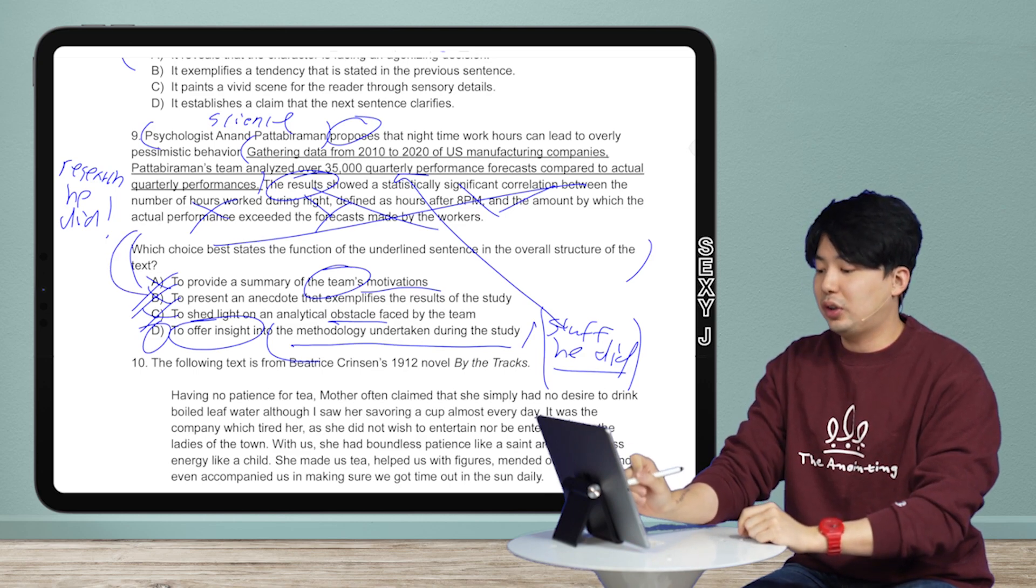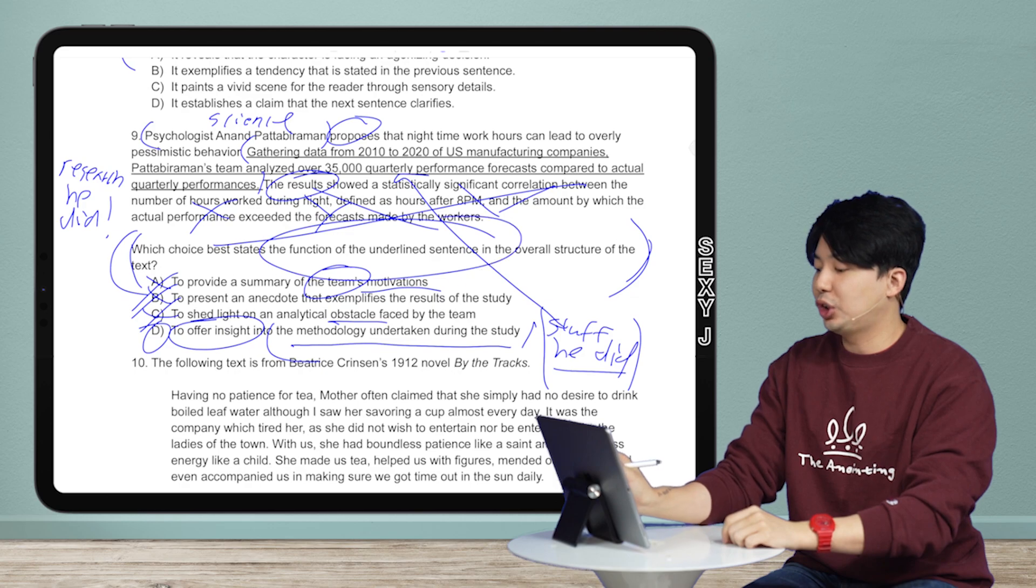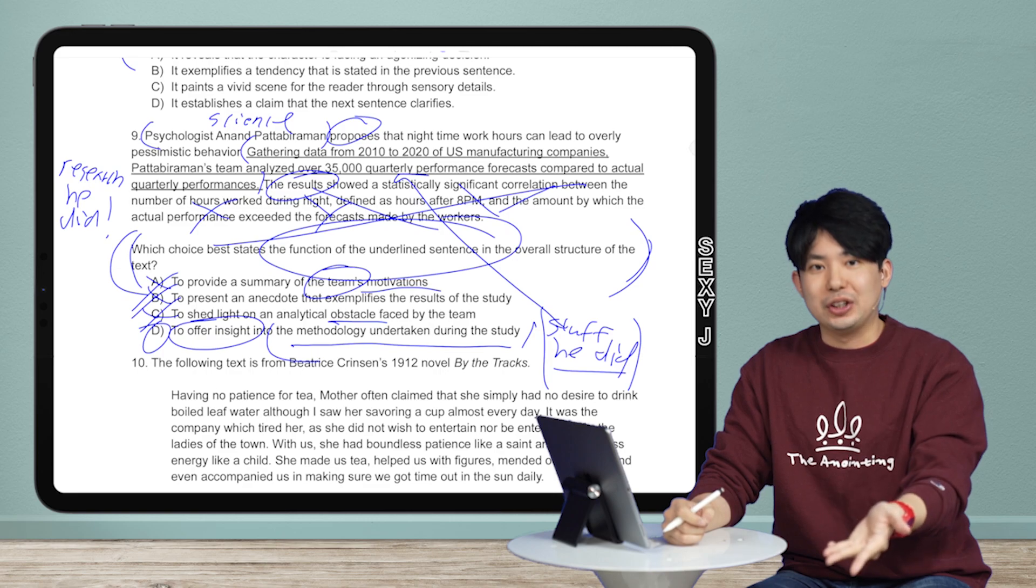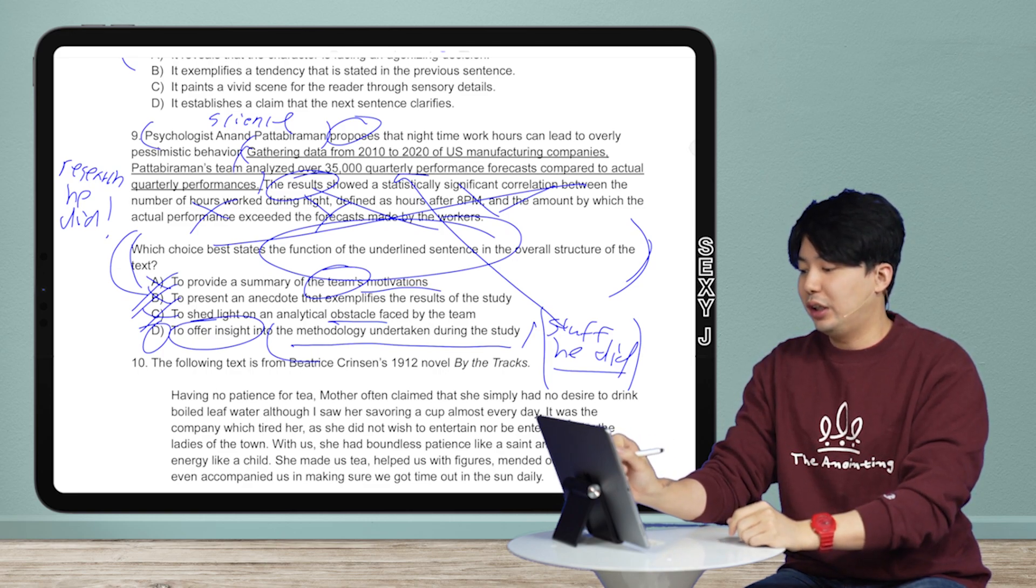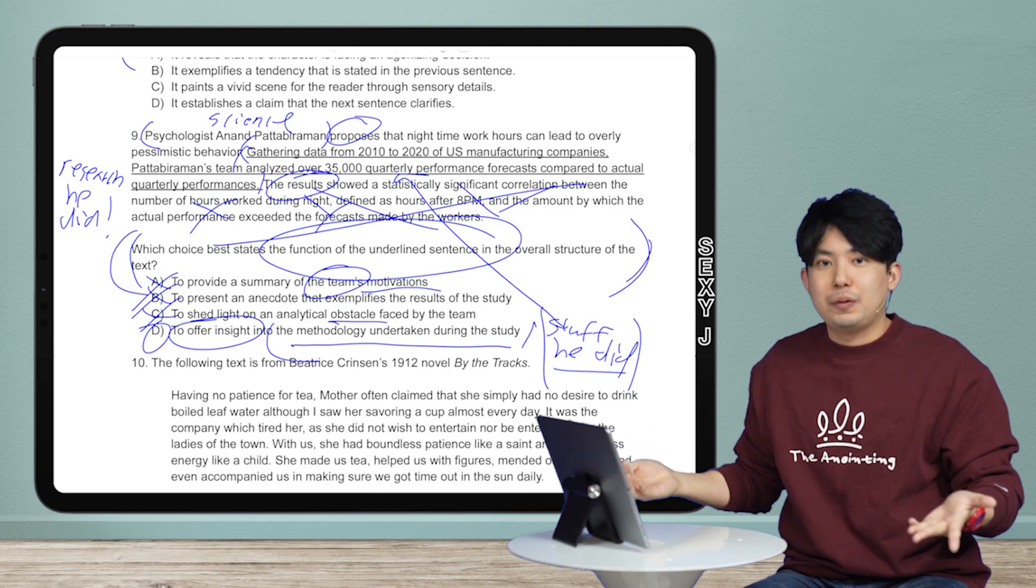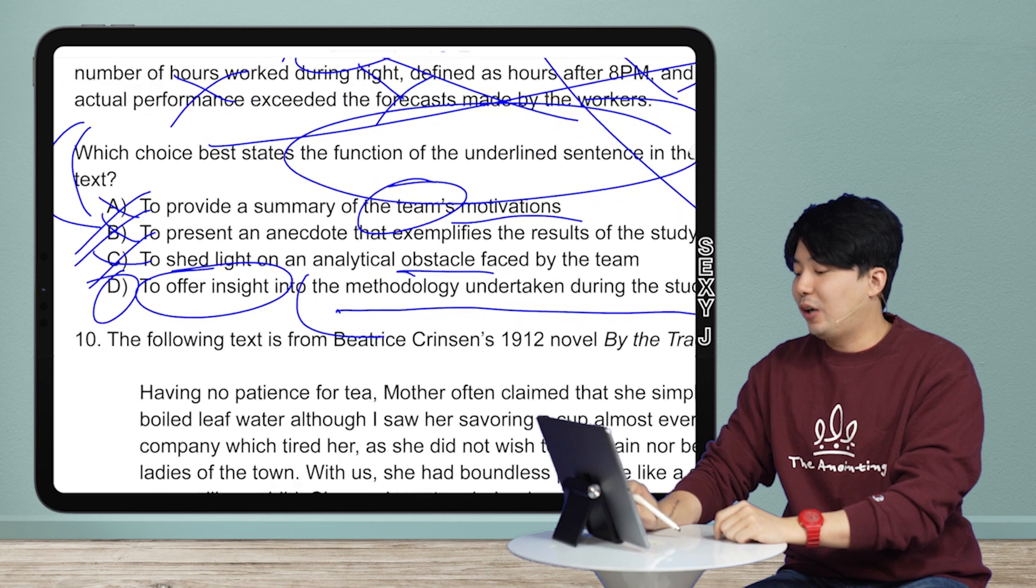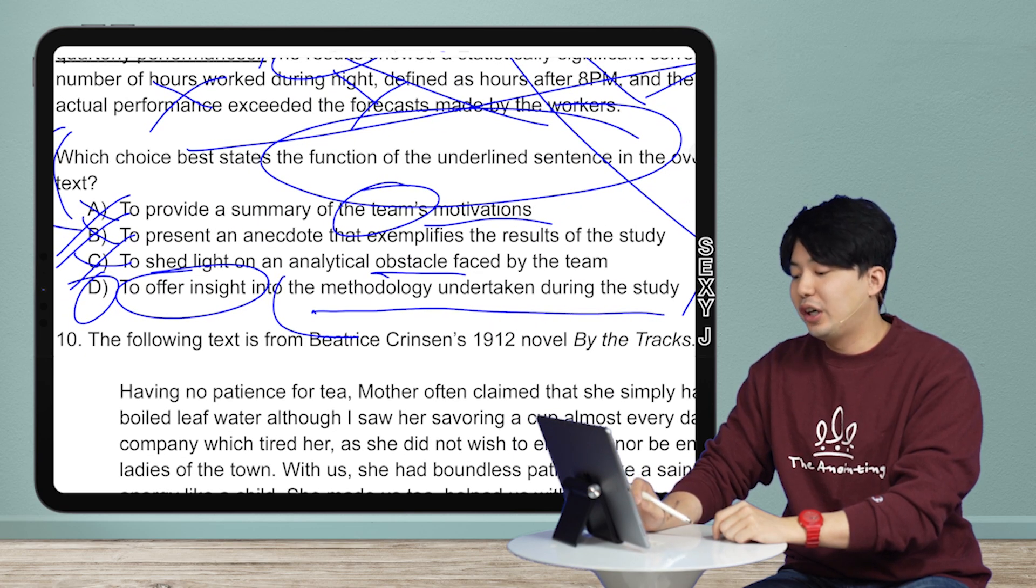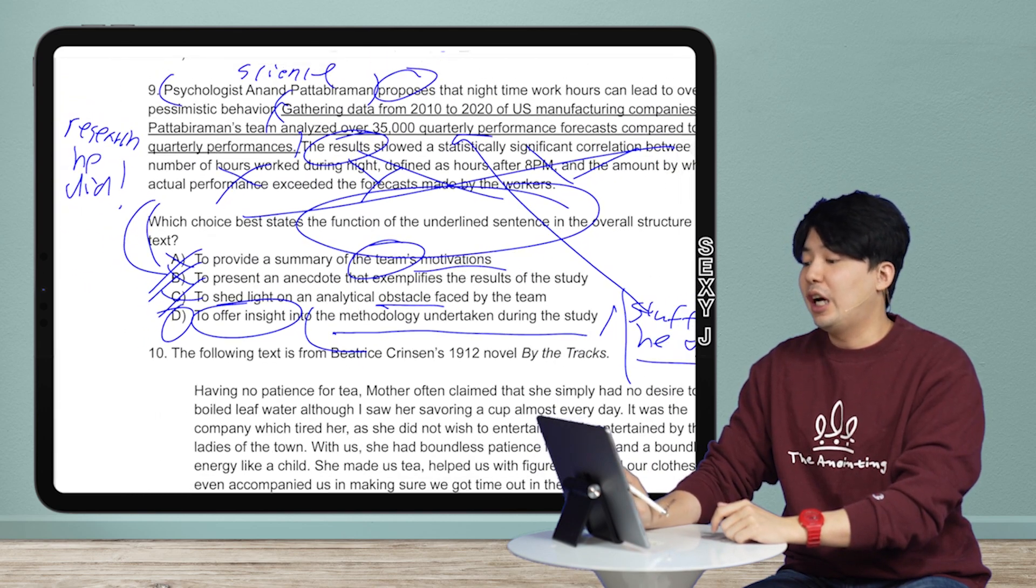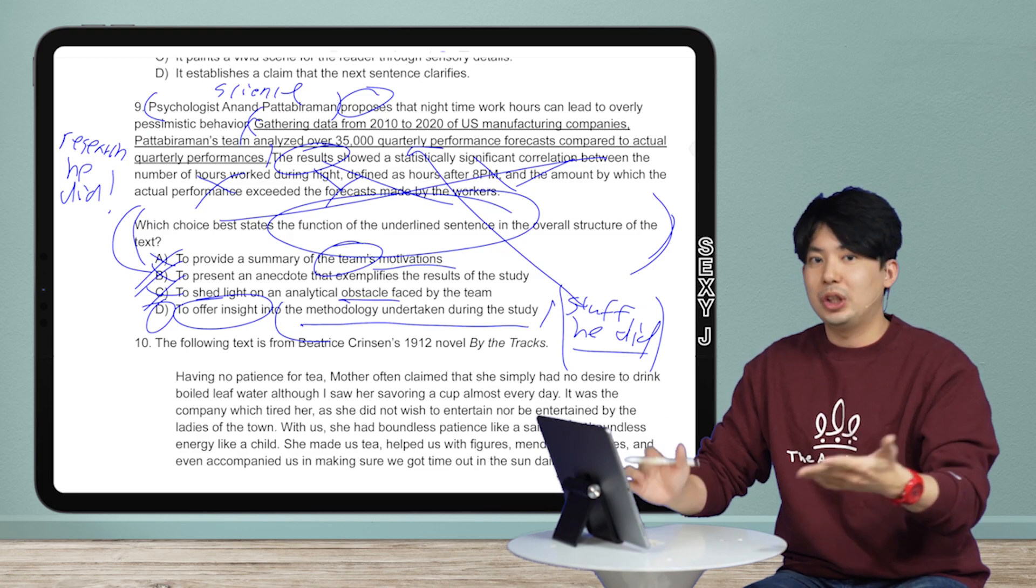And I'll sum it up for you guys right now. Number one, focus not on the text, but the actual question itself. So from there, I have noticed that this is the function of the sentence. Then I recognize what type of passage is it afterward. It's a science passage. And then looking at the underline is, oh, it's research he did. It's stuff he did. So I'm looking for stuff he did, research he did. And it's disguised, paraphrased in this stupidly awkward, unnatural wording that SAT loves, offer insight into methodology undertaken during the study. So that's my answer. And all of the other ones, they give you an excuse for you to eliminate it. And that's how you get to it.